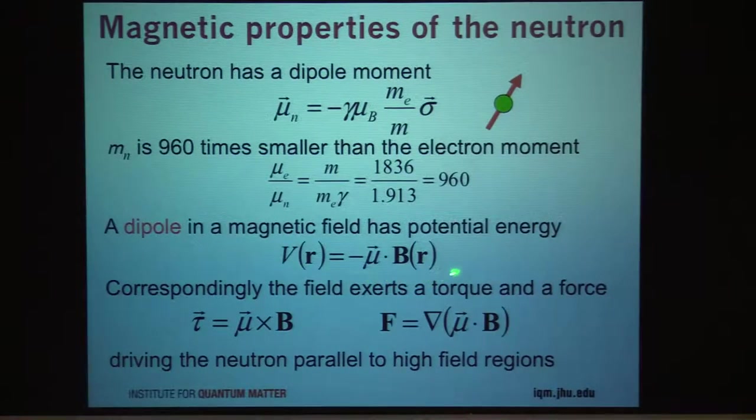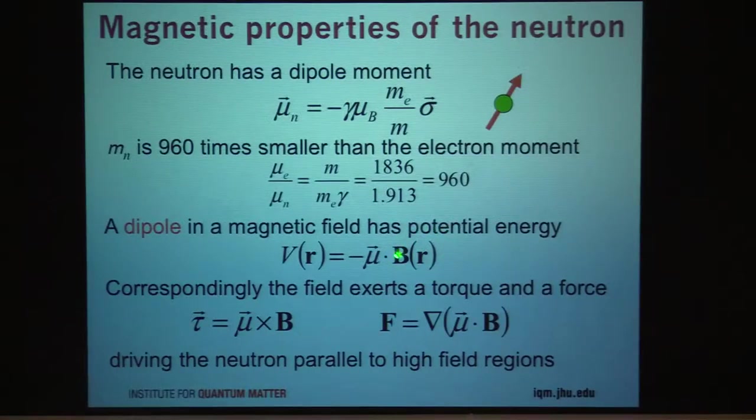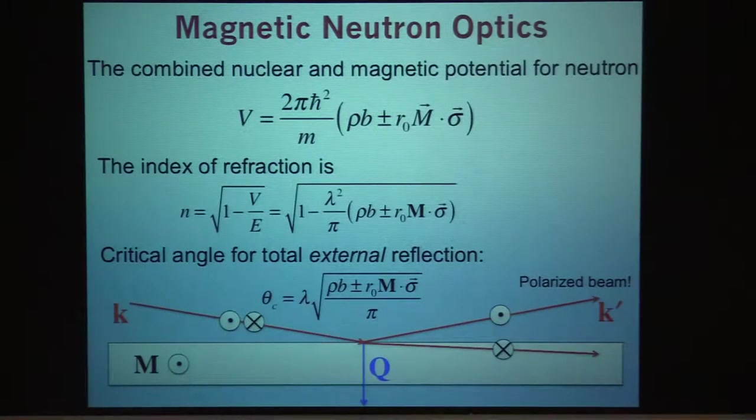So the interaction potential would be that of a dipole in the magnetic field. This is the dipole moment operator of the neutron. This is the internal field in the material and I'm correspondingly going to get both the torque acting on the neutron and a force acting on the neutron if the magnetic field is not uniform. So once it's non-uniform then I'll have a force and I'll always have a torque unless I'm parallel to the magnetic field. This basically drives the neutron towards high field regions and it orients it parallel to that field configuration. This is kind of the classical description of what is going on.